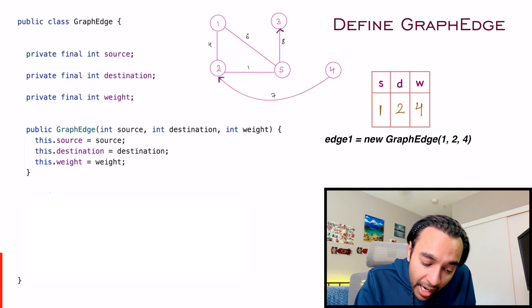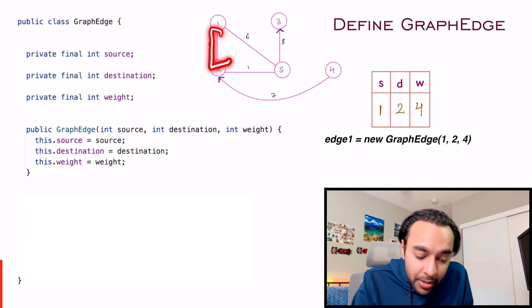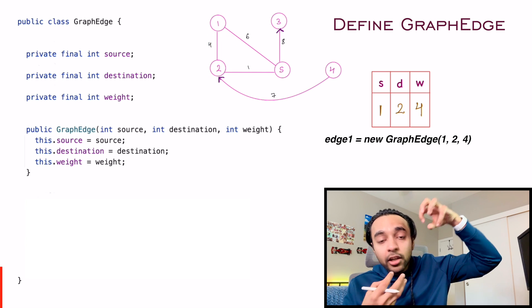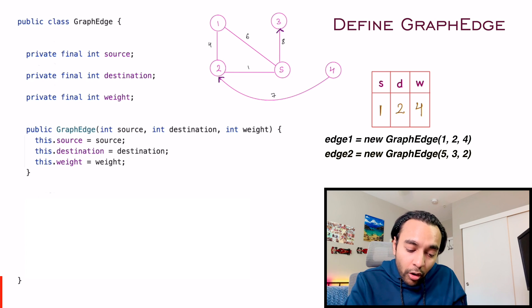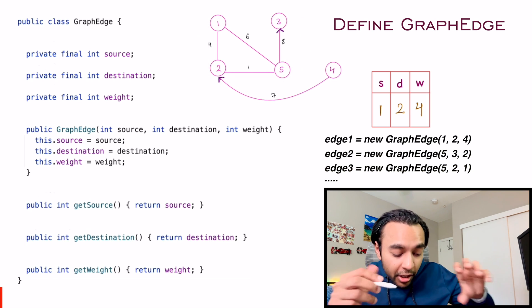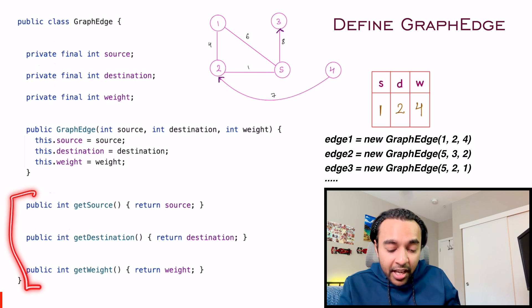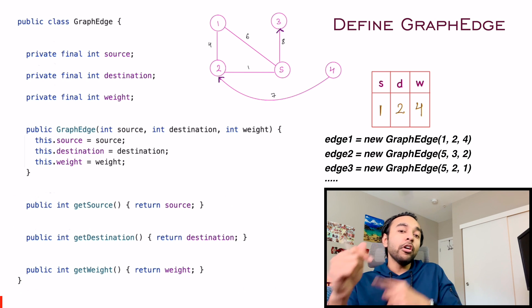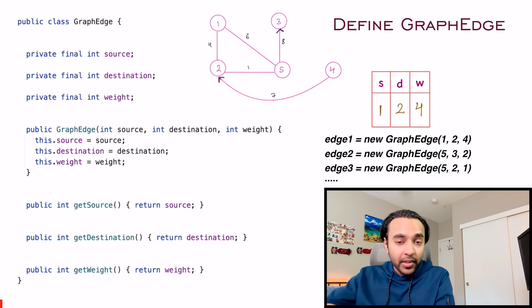So this is how I am defining this particular edge, which is going from node one to node four. Similarly, you can define all of these edges one by one. And when you're working on the graph, you have some getter methods which will assist you whenever you're working with all of your algorithms.